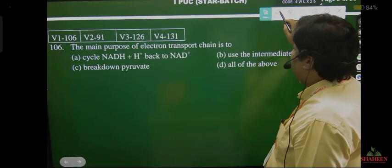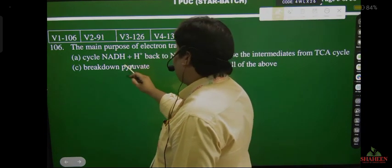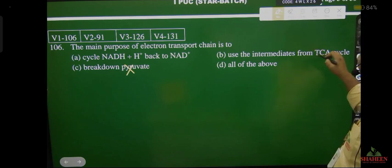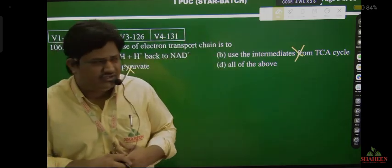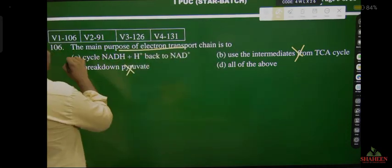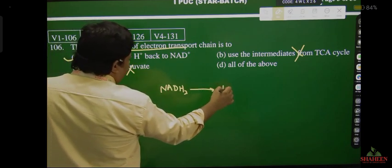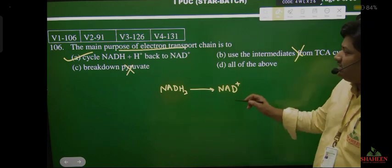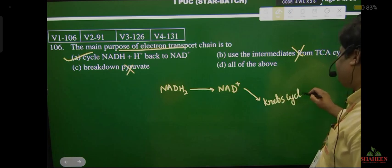The main purpose of electron transport chain is — pyruvate does not break down in ETS, pyruvate does not come into electron transport chain at all. That's why we eliminate intermediates from Krebs/TCA cycle — malic acid, succinic acid, oxalosuccinic acid, oxaloacetic acid. These are called intermediates. The main purpose of the electron transport system is oxidation of NADH to NAD+. After oxidation, NADH is converted into NAD+, so that NAD+ can go back to the Krebs cycle and be reused.